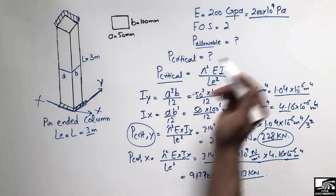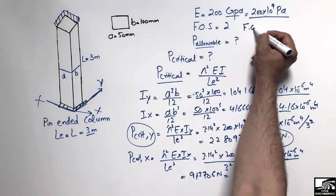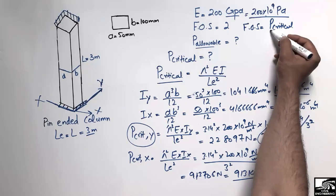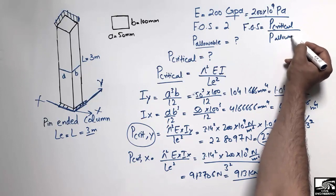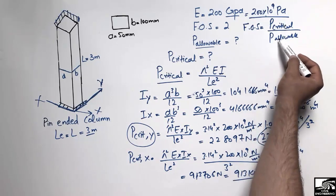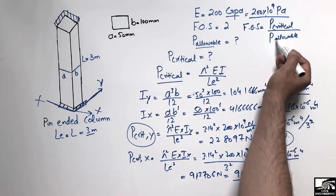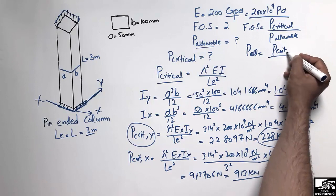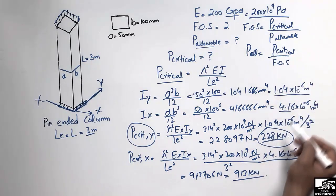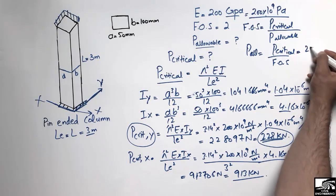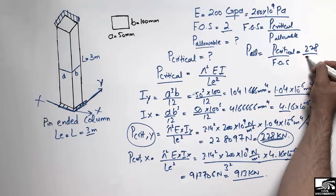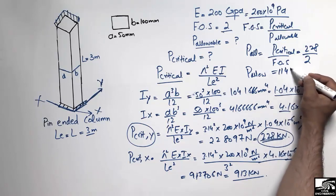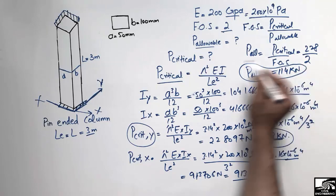To find P_allowable, we use: Factor of Safety = P_critical / P_allowable, so P_allowable = P_critical / Factor of Safety = 228 kN / 2 = 114 kN. This is the allowable load for this pin-ended column.